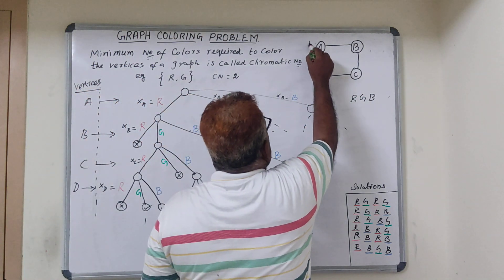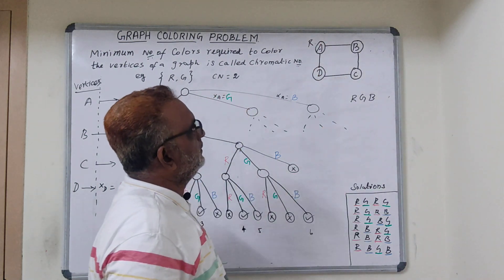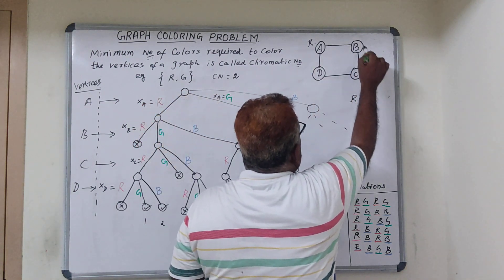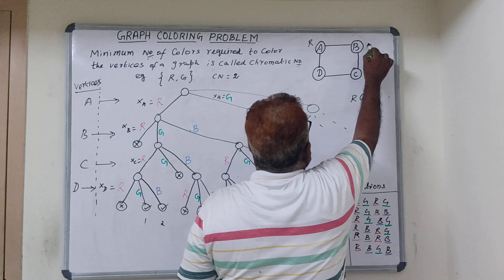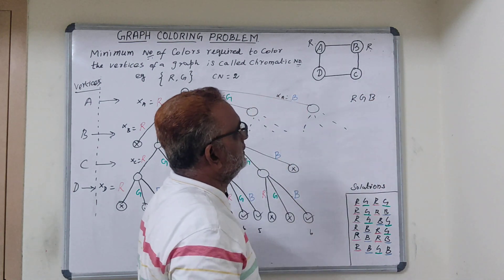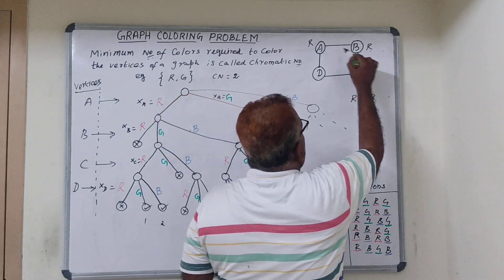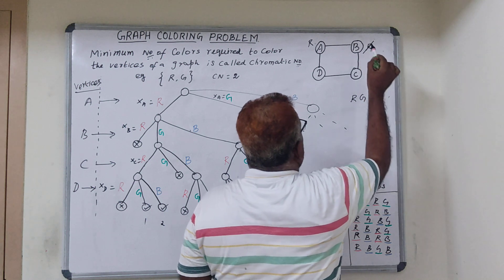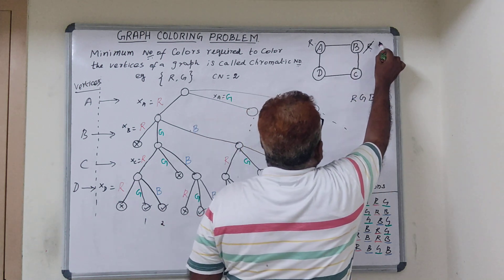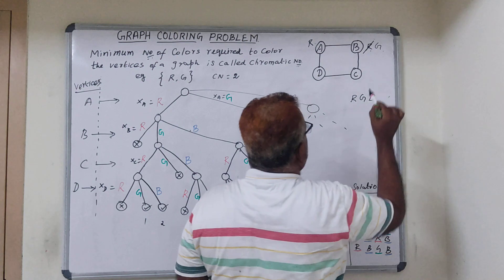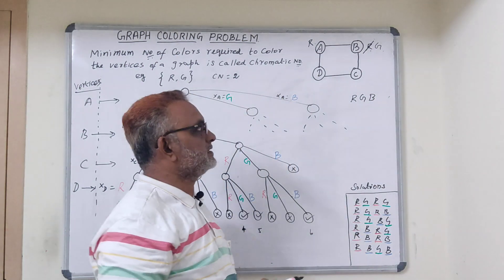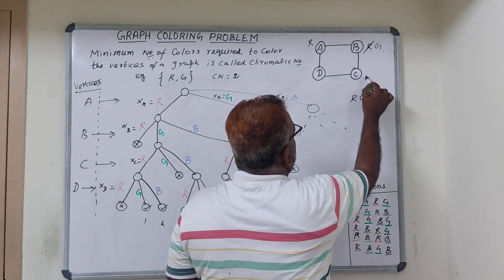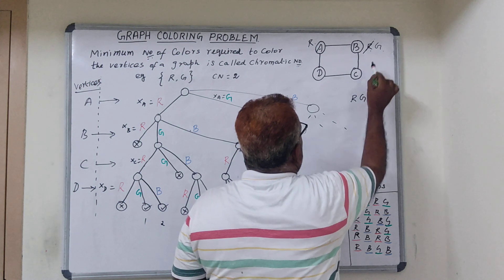Let us consider if vertex A is red. Then we can assign any one of the available colors to B. If I select red for B, then both adjacent vertices have the same color, so the constraint is not satisfied and B cannot be red. So let us select the next color, green. So A is red and B is green.